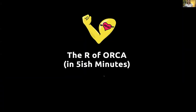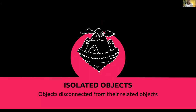The R of ORCA — ORCA is Objects, Relationships, CTAs, and Attributes. We're really going to be focusing on that R pillar right now, in about five to ten minutes. The main reason we're obsessed with relationships in the OAUX world is because we want to avoid what we call isolated objects. There are four different unintuitive objects discussed in OAUX — you can learn about them in the Udemy course or the masterclass — but we're going to focus on these isolated objects: objects that are disconnected from their related objects.